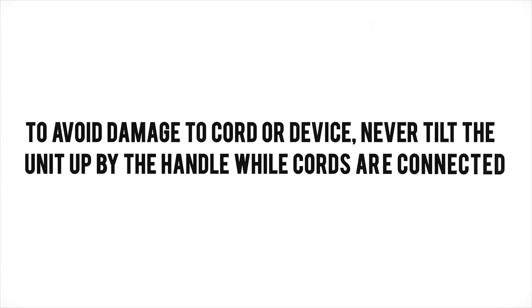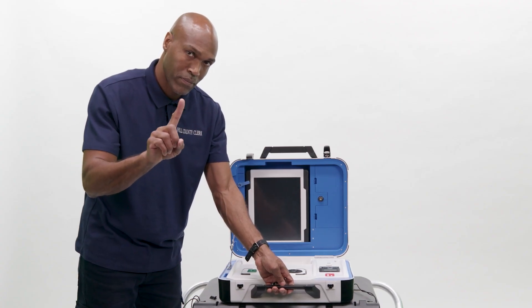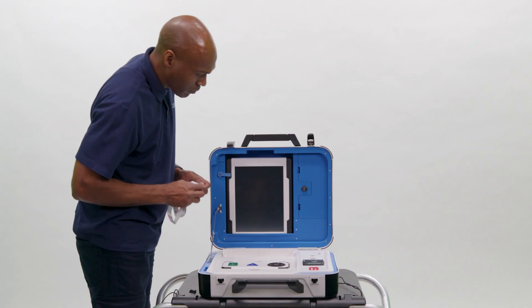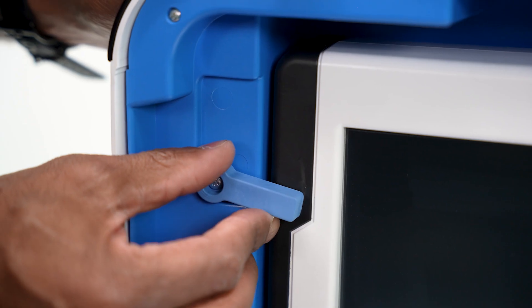To avoid damage to cord or device, never tilt the unit up by the handle while cords are connected. Unlock the tablet with the blue key. Unlatch the tablet on the left side and remove it.